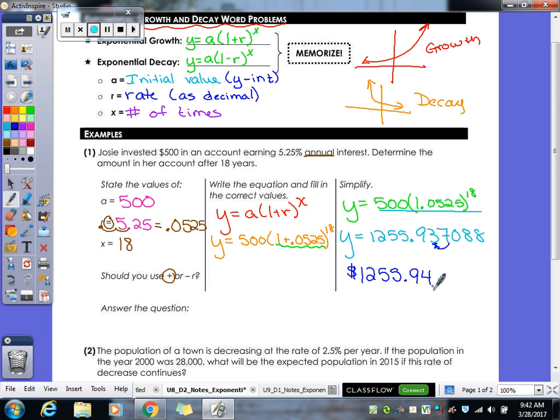So it would be $1,255.94. So to answer the question, Josie will have $1,255.94.